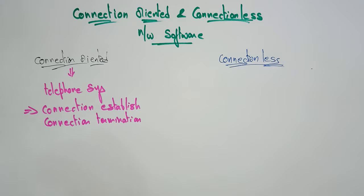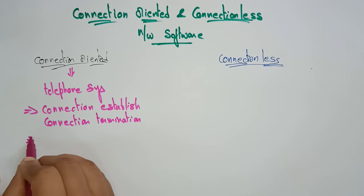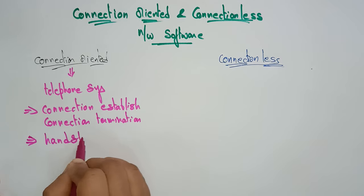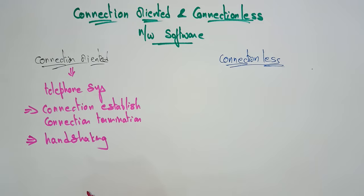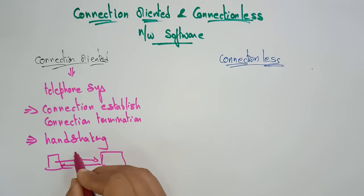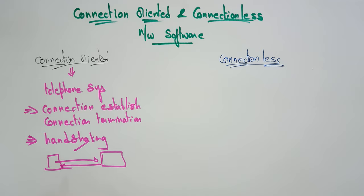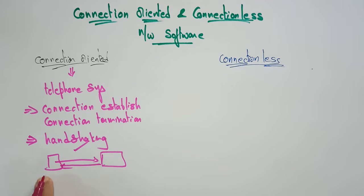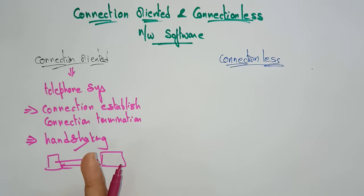In connection-oriented services, a handshake method is also used to establish the connection between the sender and receiver. The sender sends a message, and the receiver sends back an acknowledgement confirming receipt. This is the concept of handshaking. So in connection-oriented services, the connection is established, acknowledgement is received, and then the connection is terminated — everything is pre-planned.